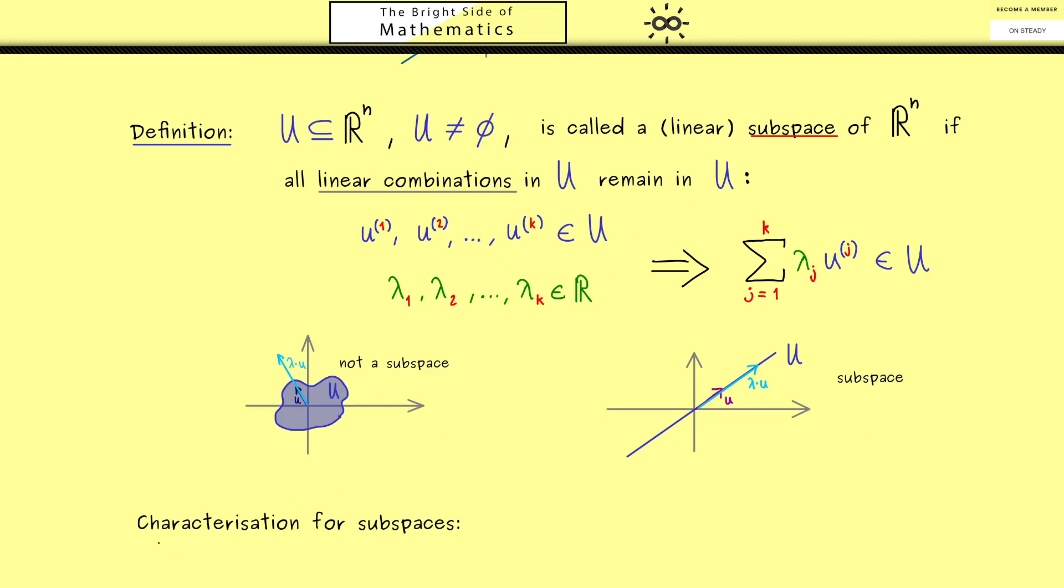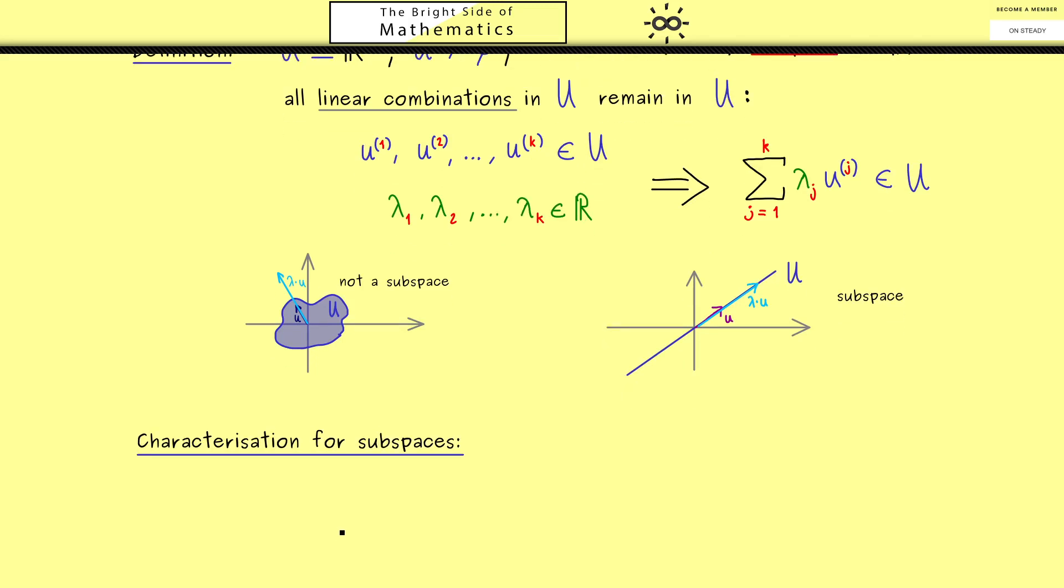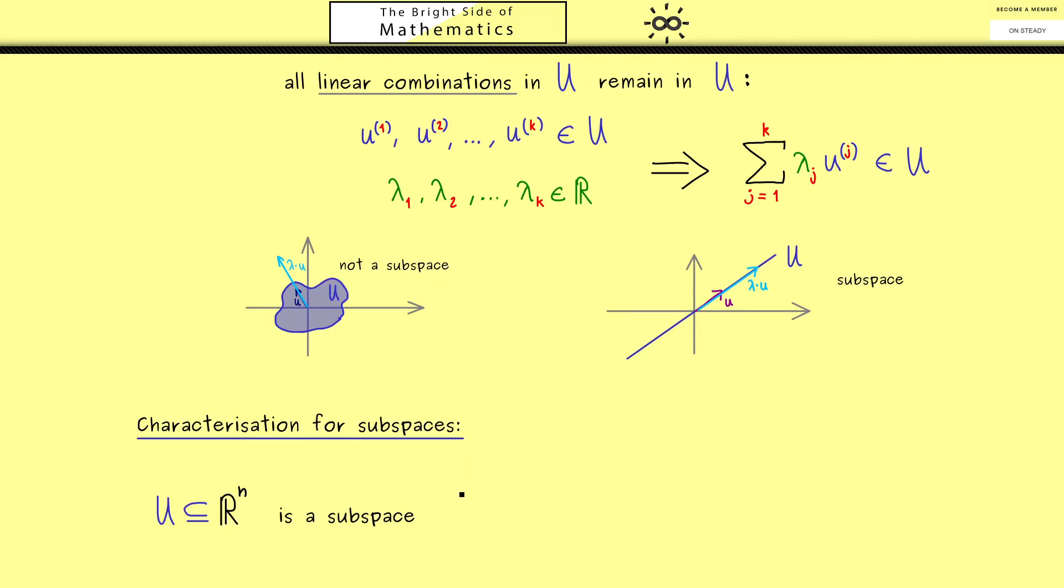Therefore now in the next part I want to show you how you can easily check if a set U is a subspace. This characterization is very helpful when you calculate with concrete examples. It tells us that any subset U in Rn is a subspace if and only if three conditions are satisfied. Of course from before we already know the conditions, but it's helpful to write them down, simply because now we have an order how to check for a subspace.